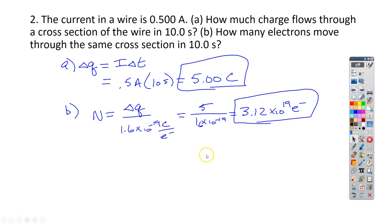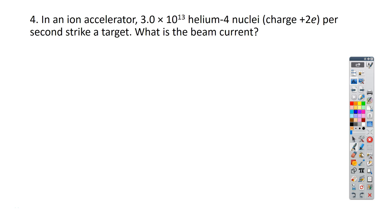For number 4, you have an ion accelerator, so basically you have a great big device that has an electric field, and it's accelerating helium-4 nuclei. So these have a charge of positive 2e because they've lost two electrons. So it's two neutrons, two protons, that's why we call it helium-4. And there are 3 times 10 to the 13th of these nuclei, and those all strike a target once per second. They want to know, what is the beam current?